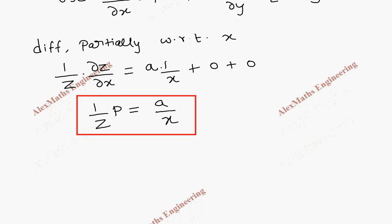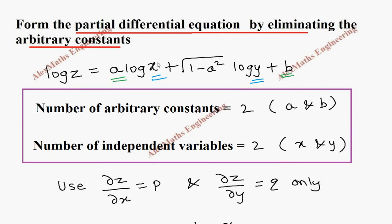Now in the same way, we are going to do differentiation partially with respect to y. So once again, 1/z but now it is ∂z/∂y. And first term is treated as a constant. So fully 0. Second term is log y.